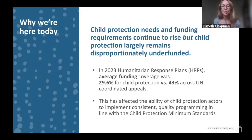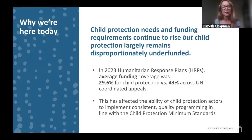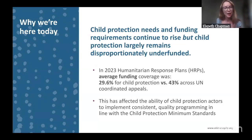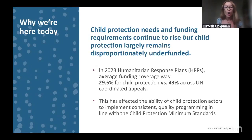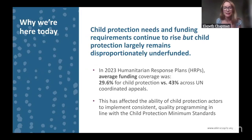Last week, along with our partners — the Child Protection Area of Responsibility, UNHCR and Save the Children — we launched our annual funding report, the Unprotected. This analyses child protection funding across UN Coordinated Appeals. This fifth report in the series tracked child protection and humanitarian funding in 2023. The report shows that despite historically high levels of funding, the funding rate for UN Coordinated Appeals was only 43%, a record low. Furthermore, only 30% of requested child protection funding was received across these appeals.